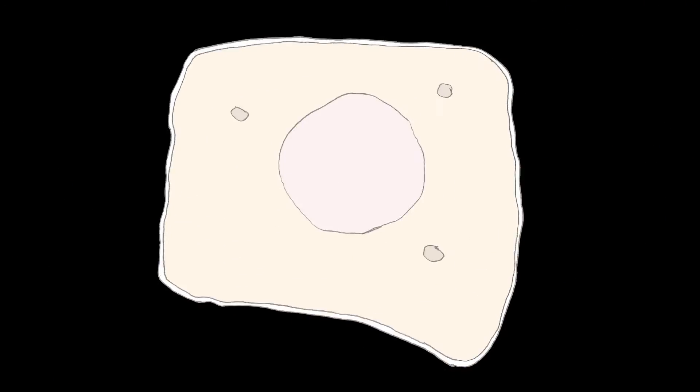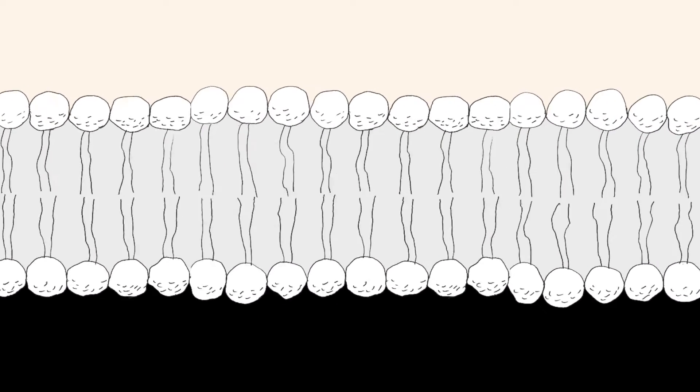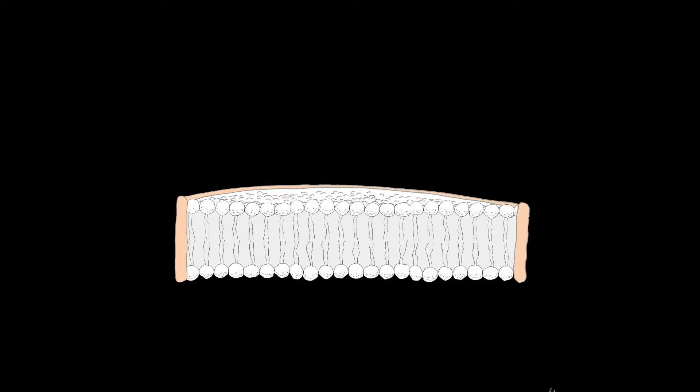The membrane of every living cell is made of lipids organized in two layers, a lipid bilayer. We've figured out how to make uniformly sized discs that contain this lipid structure.